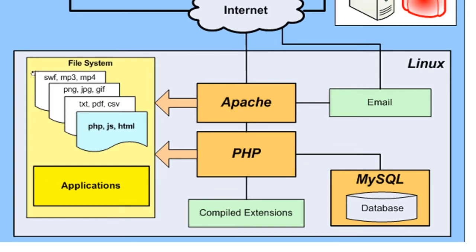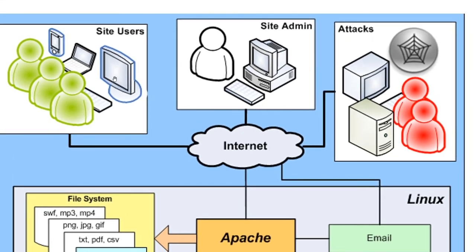The file system of the operating system maintains HTML, JavaScript, PHP pages, text pages, PDFs, spreadsheets, images like PNGs, JPEGs, and GIFs, as well as sound and video files like SWFs, MP3s, and MP4s. Then you've got all these people on the internet — from normal users to the website administrator to hackers with malicious intent — all making their connections through the internet to use or attack these services.